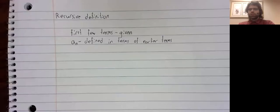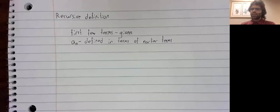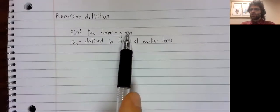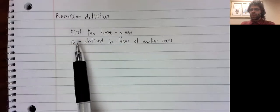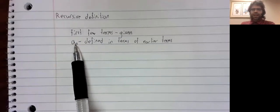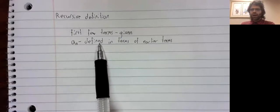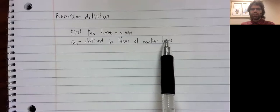A recursive definition looks like this: we give you the first few terms, and then a sub n, in general, is defined in terms of earlier terms.